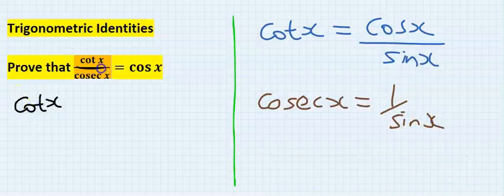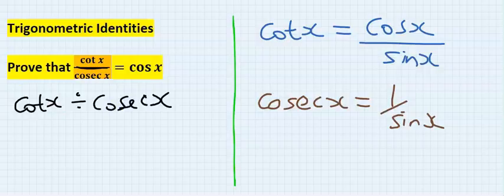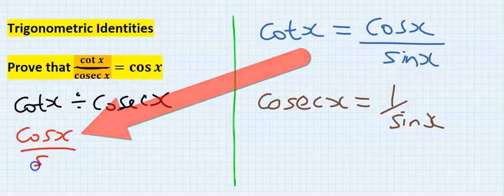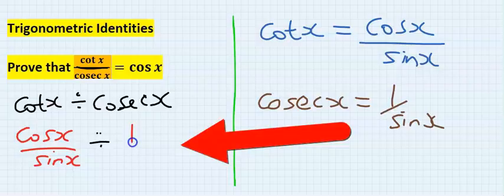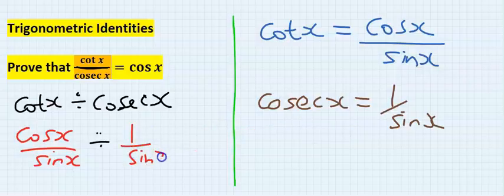Cot x is dividing cosec x. The value of cot x is cos x over sine x, and the value of cosec x is 1 over sine x.